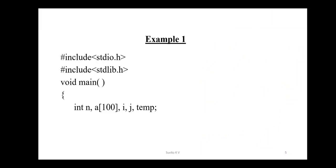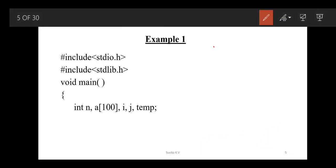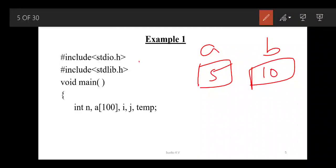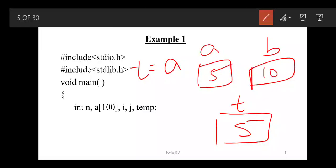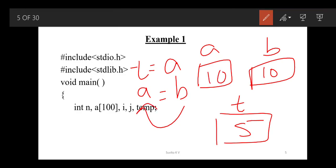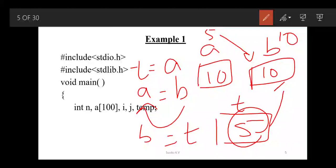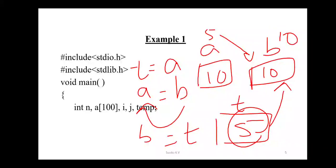Let me give an example for swapping. Consider A has value 5 and B has value 10. First write: temp = A, so A's value 5 is transferred into temp. Next: A = B, so 10 is transferred to A. Now A is 10, and B should have 5, which is stored in temp. So finally: B = temp, transferring 5 to B. This is how you swap elements.